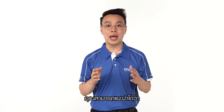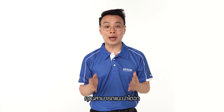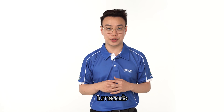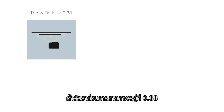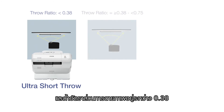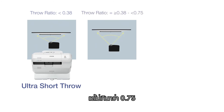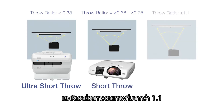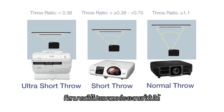With this result, you will be able to make recommendations on the type of projector based on the respective throw ratios. For example, if the projector throw ratio falls below 0.38, an ultra short throw projector will be very suitable. If the throw ratio is about 0.38 but less than 0.75, a short throw projector would be recommended. And if the throw ratio is beyond 1.1, a normal projector will be the ideal choice.